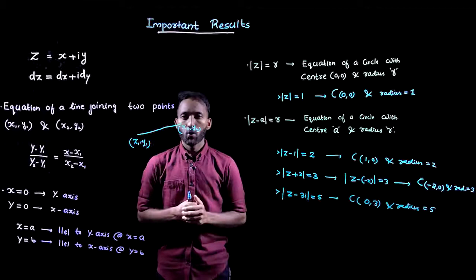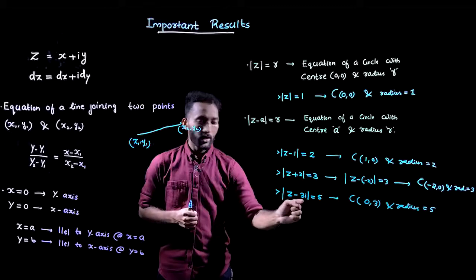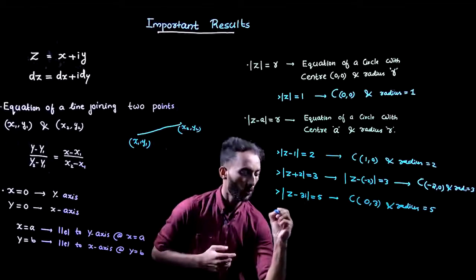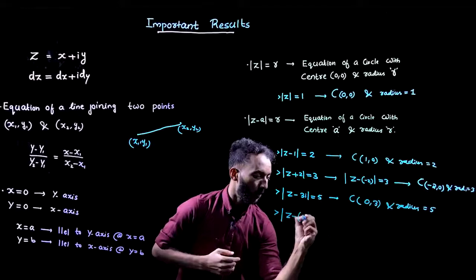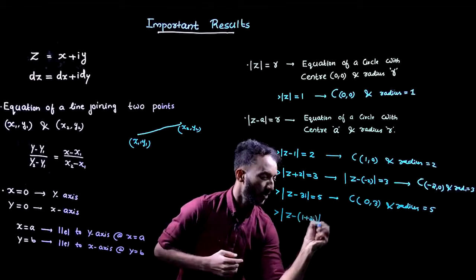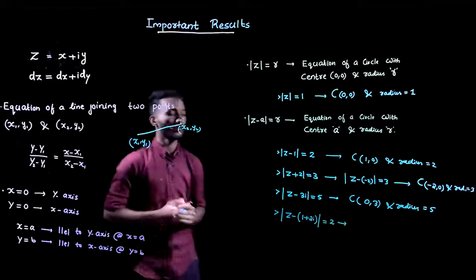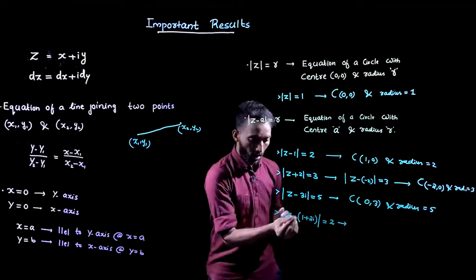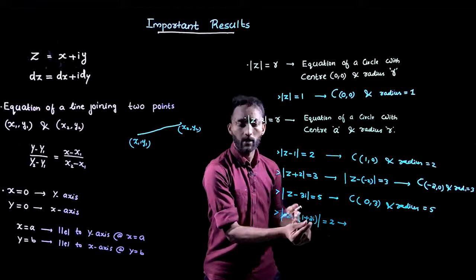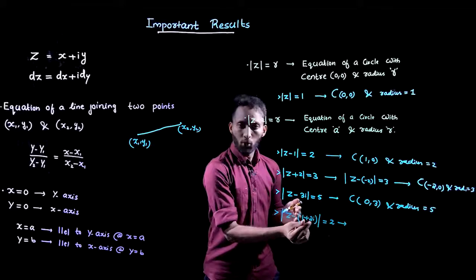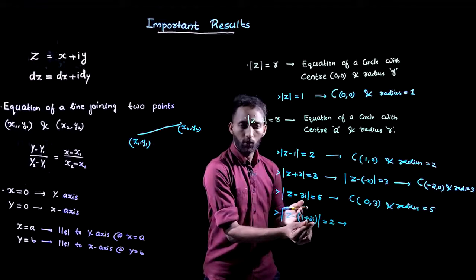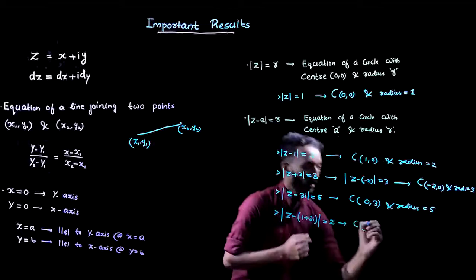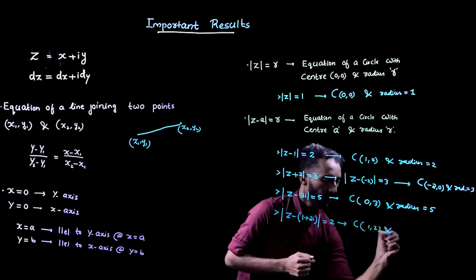Consider the equation |z minus (1 plus 2i)| = 2. This is also an equation of a circle. The center is found after the negative sign, where we find 1 plus 2i. The x-coordinate of the center is the real part and the y-coordinate is the imaginary part. Therefore the center is (1, 2) and the radius is 2.